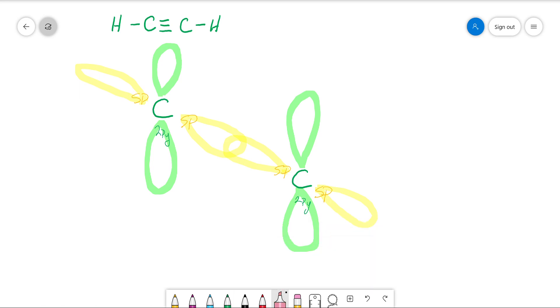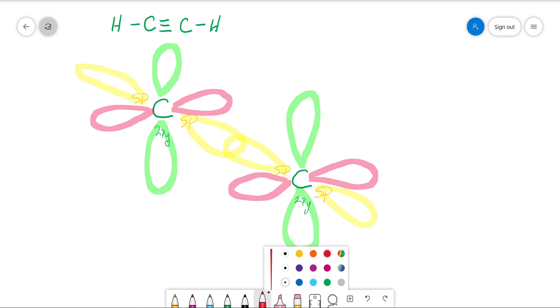And then perpendicular to that—and it doesn't matter if it's the two py or the two px or the two pz, just in my picture the way it's oriented, that's what I'm going to say. Okay, so that would be like the two px.